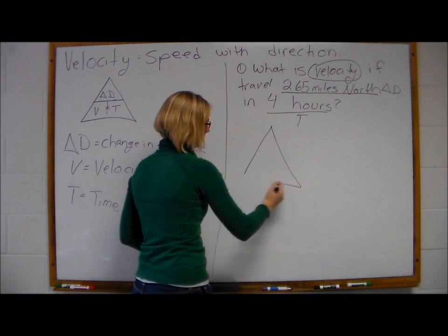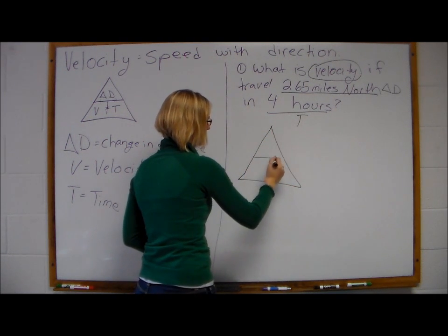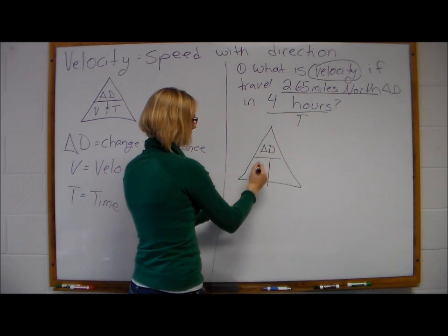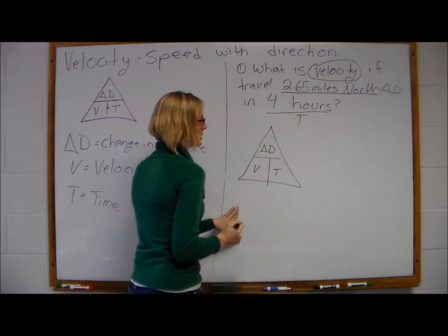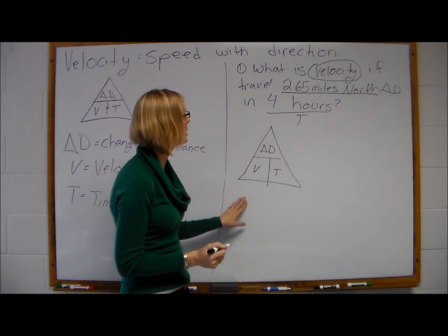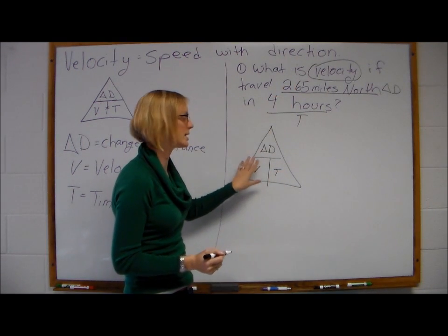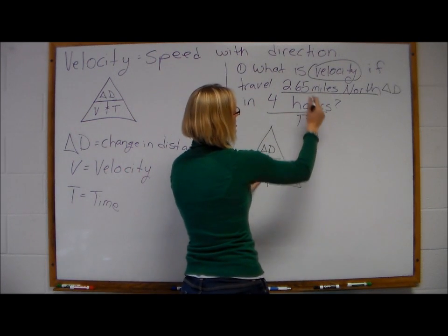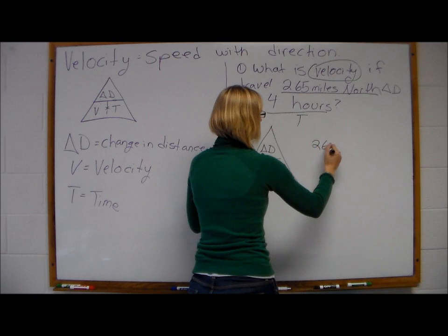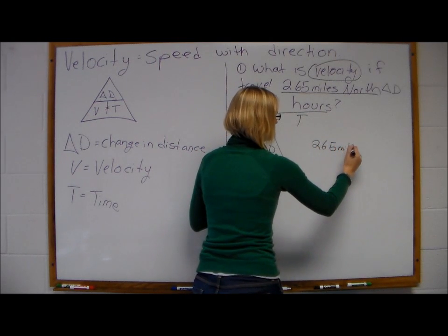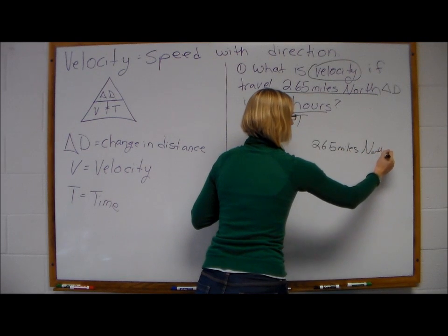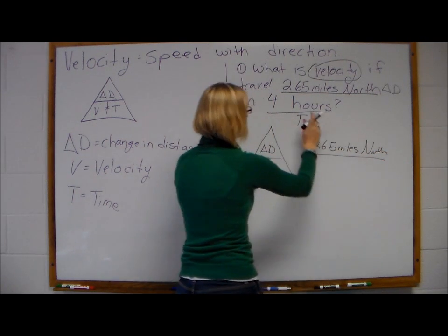I'm going to draw your triangle. We have delta D over V next to T. So we're going to plug in what we know. We're looking for velocity, so we're going to cover up our V. So we have delta D, which was 265 miles north, divided by our hours, which was 4 hours.